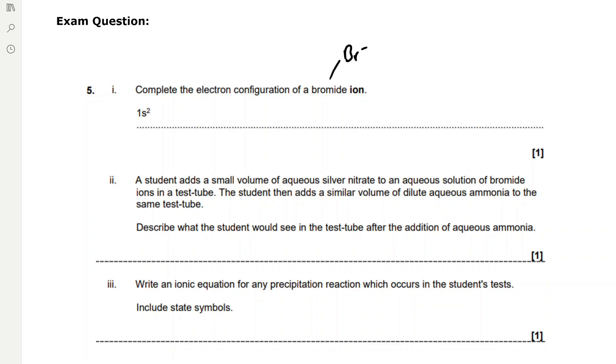The electron configuration is going to be 1s2, 2s2, 2p6, 3s2, 3p6, 4s2, remembering that 4s fills before 3d, 3d10. Bromine is in the fourth period so it's going to have its outer electrons in the 4p-subshell. So it's 4p6 because that's a full 4p-subshell.